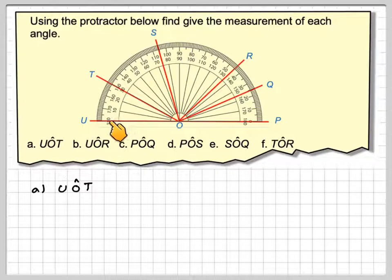So we notice on a protractor that we have 180 here and 0 here. As we're starting from U, we need to start to measure on the inside of the protractor, not the outside. So this will be 30 degrees.